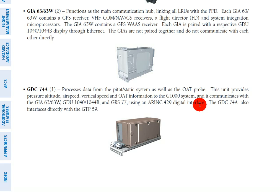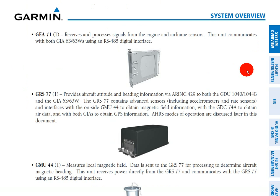Continuing down, the next thing we see is the GEA 71. We have engine and airframe sensors, so this unit receives and processes signals from the engine monitoring equipment and from the airframe equipment, then sends that to the GIA 63W — the MUX or desktop computer analogy.